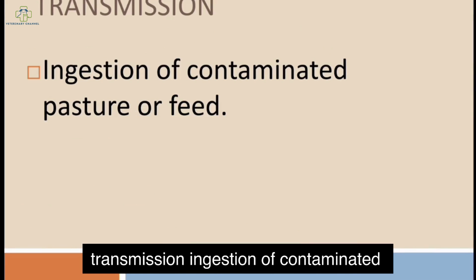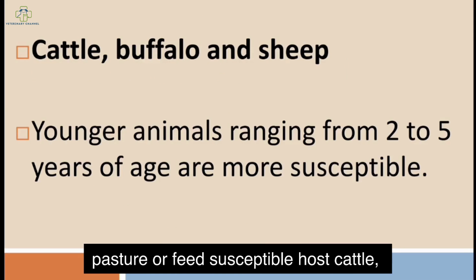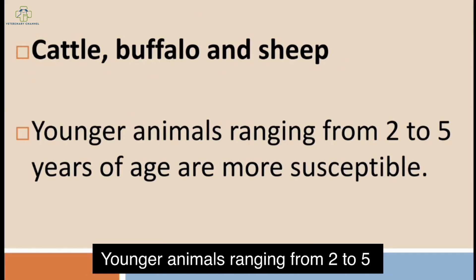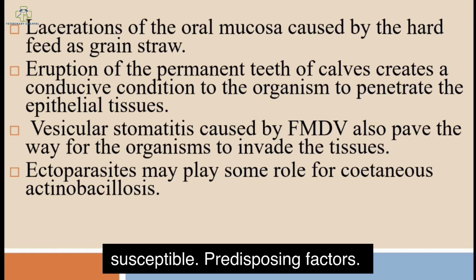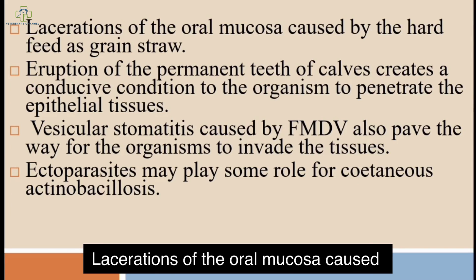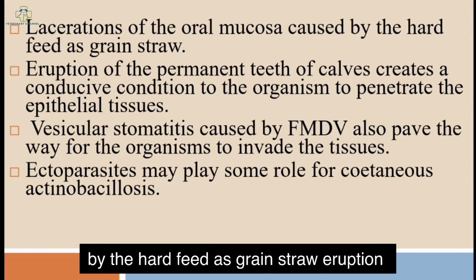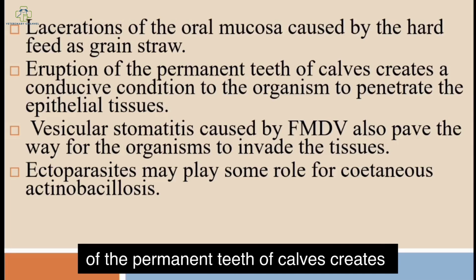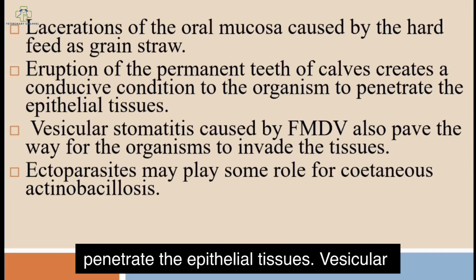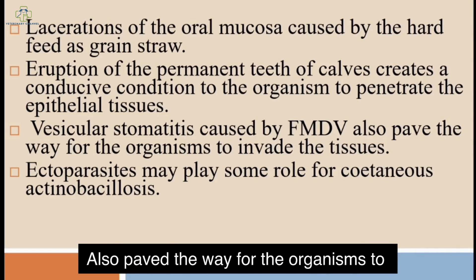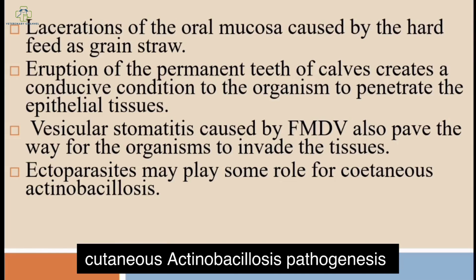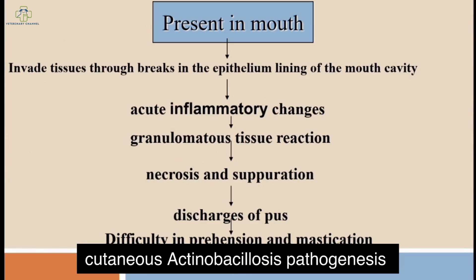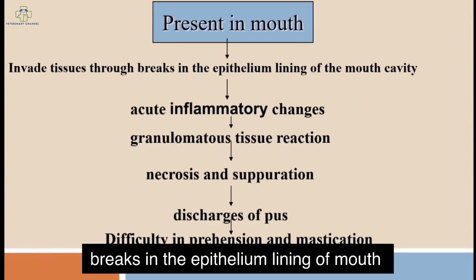Transmission occurs through ingestion of contaminated pasture or feed. Susceptible hosts include cattle, buffalo, and sheep; younger animals ranging from two to five years of age are more susceptible. Predisposing factors include abrasions of the oral mucosa caused by hard feed such as grain and straw, eruption of permanent teeth, and vesicular stomatitis caused by FMDV, which also paves the way for organisms to invade tissues. Active parasites may also play some role.